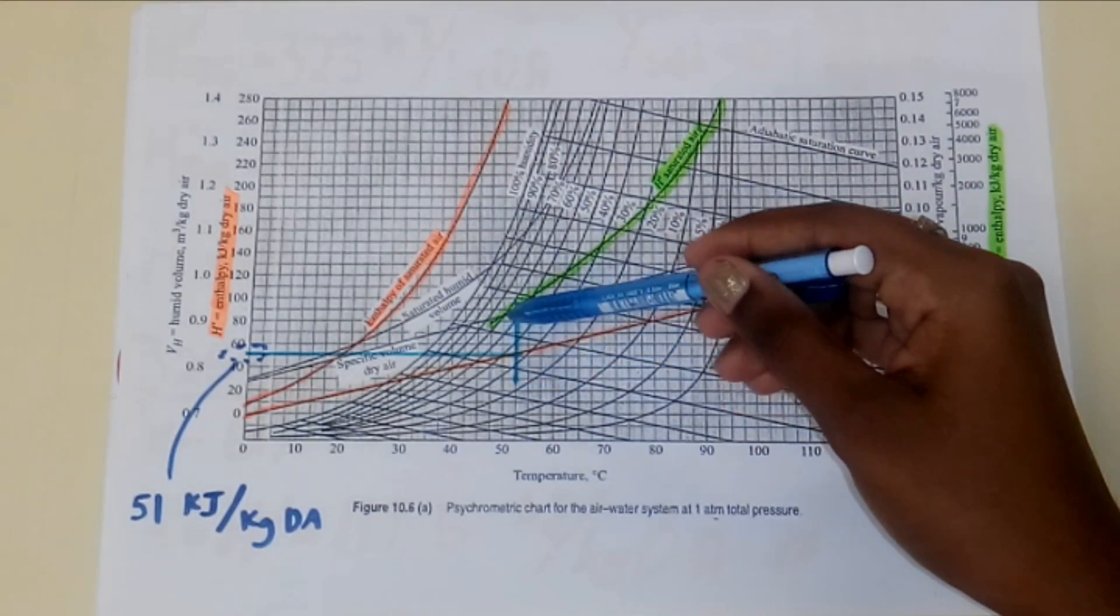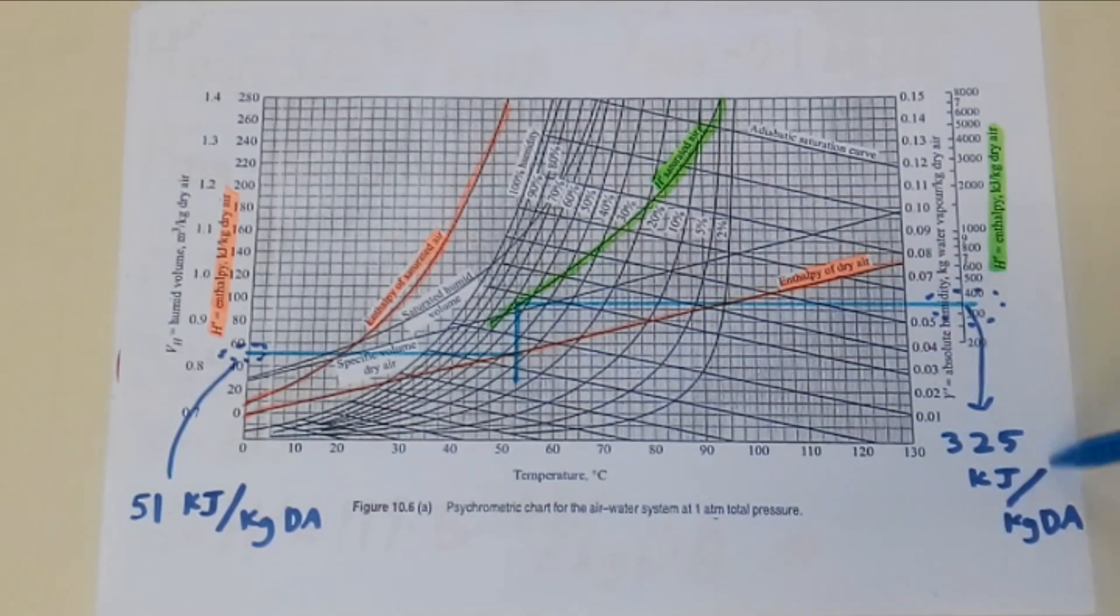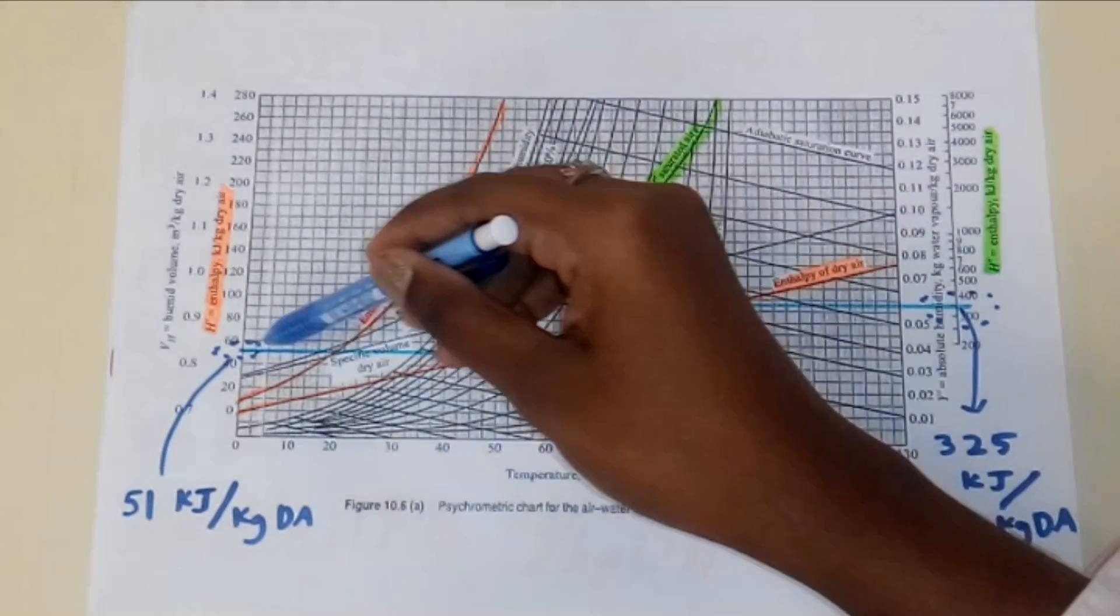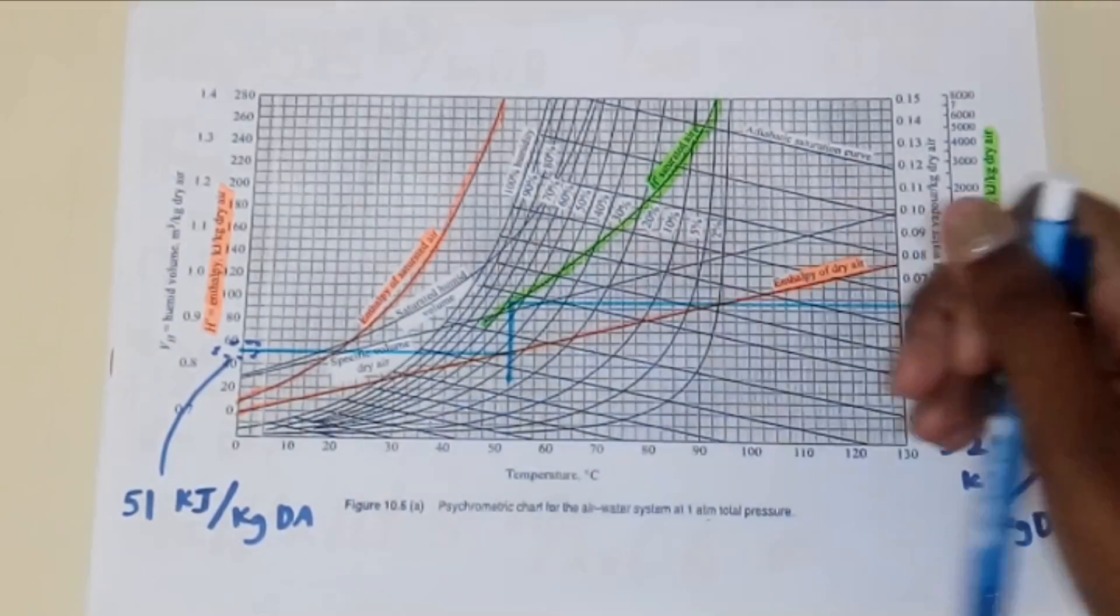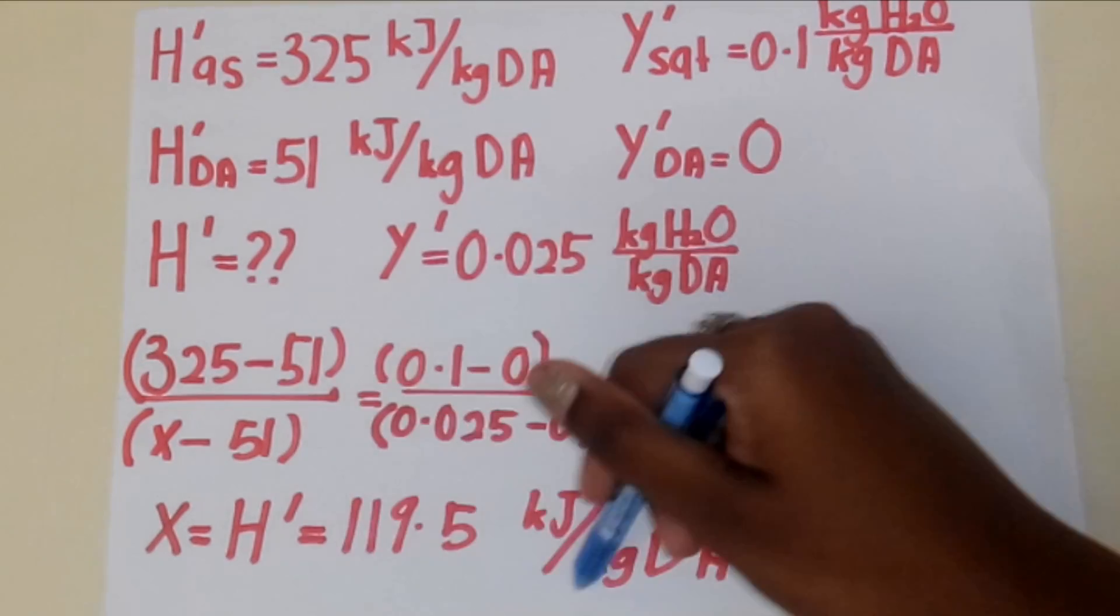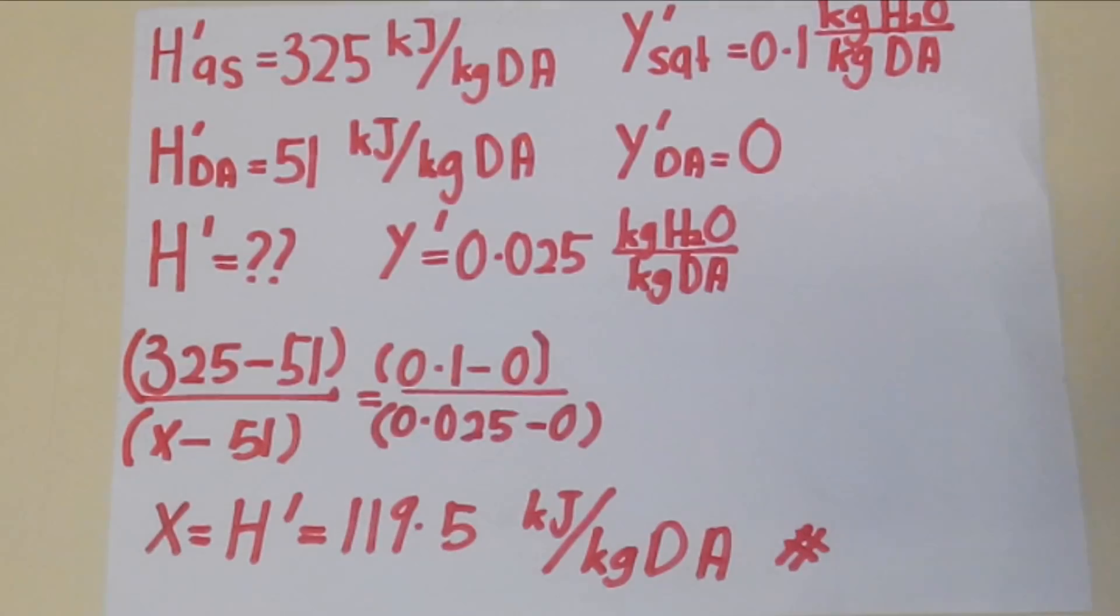We find the enthalpy of saturated air and dry air and perform interpolation. The enthalpy of saturated air is 325 kilojoules per kilogram dry air, while the enthalpy for dry air is 50 kilojoules per kilogram dry air. Interpolation gives enthalpy 119.5 kilojoules per kilogram dry air. Thank you.